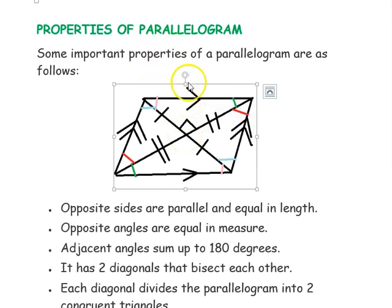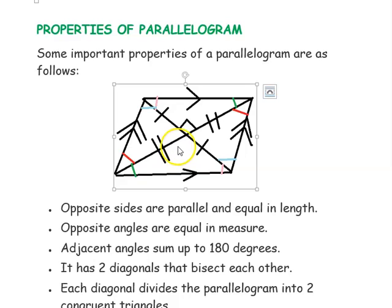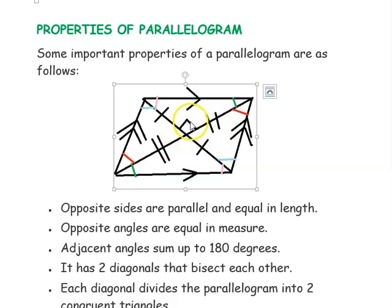Next we will see the properties of parallelograms. Opposite sides are parallel and equal in length. Opposite angles are equal. Adjacent angles sum up to 180 degrees. It has two diagonals that bisect each other, and the angle formed at the diagonals is 90 degrees.